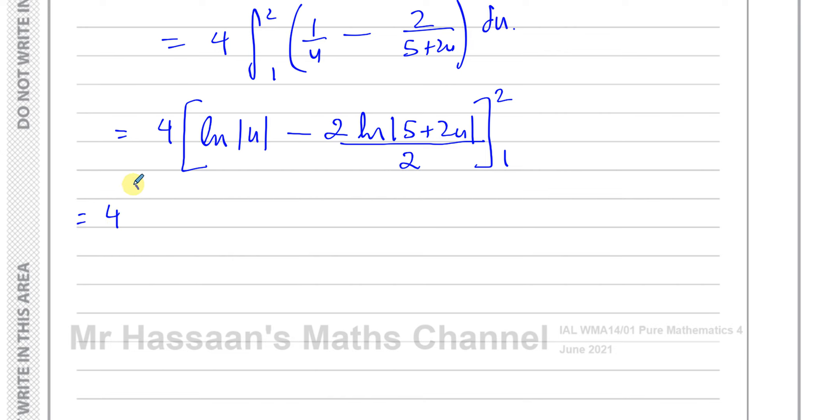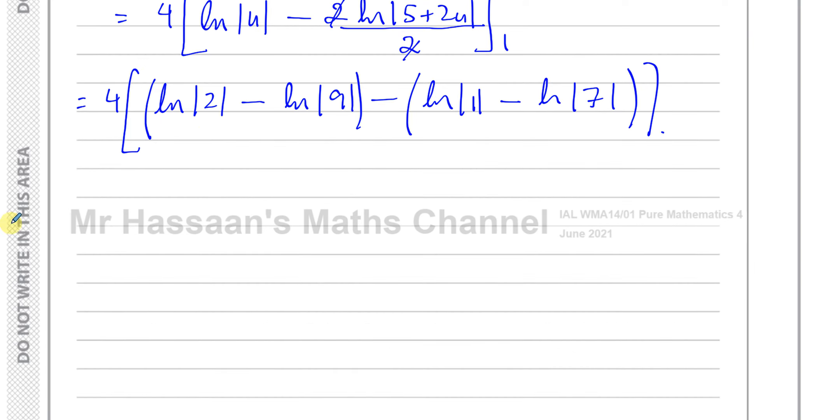So this is 4 times ln of the modulus of 2 minus the ln of the modulus of 5 plus 4, which is 9, minus ln of the modulus of 1 minus the ln of the modulus of 5 plus 2, which is 7. So you have 4 times, this is the ln of 2 minus the ln of 9. Minus the ln of 1, which is 0, plus the ln of 7. This becomes 0, so you're left with 4 times the ln of 2 plus the ln of 7 minus the ln of 9.